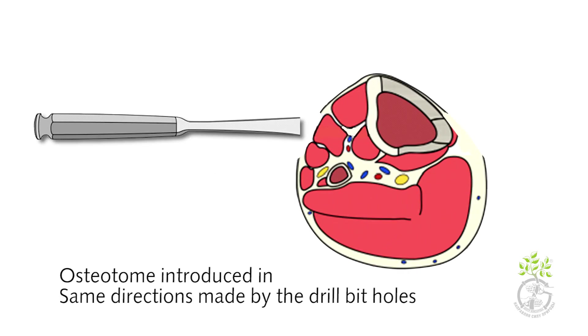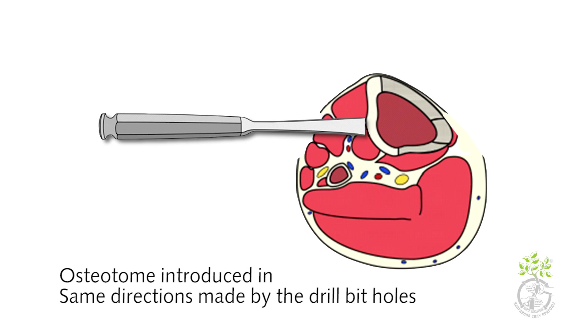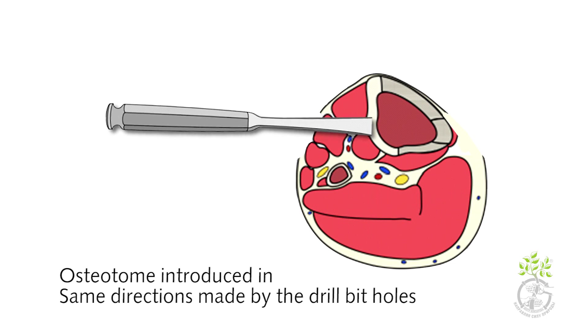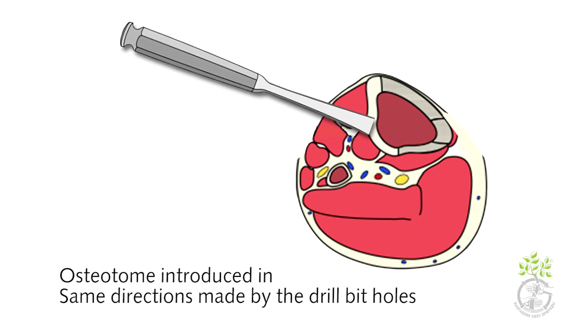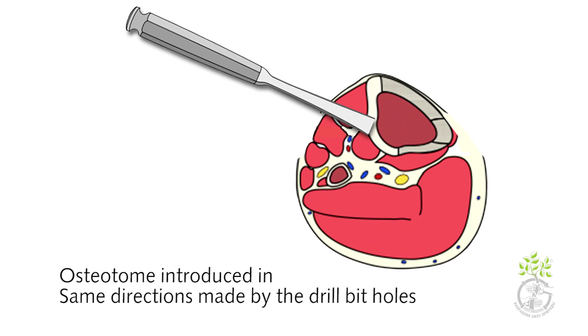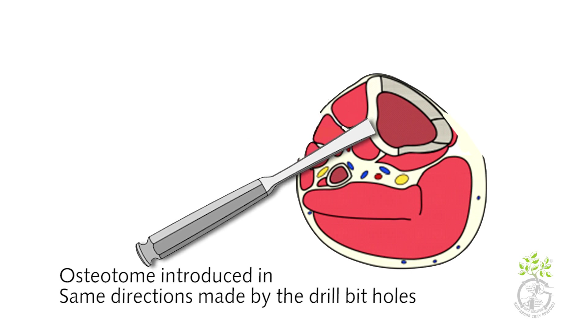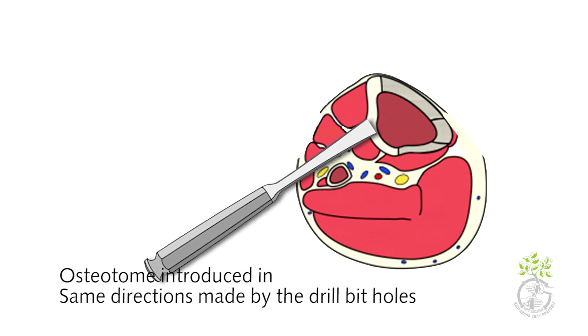An osteotome is introduced along the line made by the pilot holes, and each time the hammer and the osteotome are directed in the same directions as the drill bit.